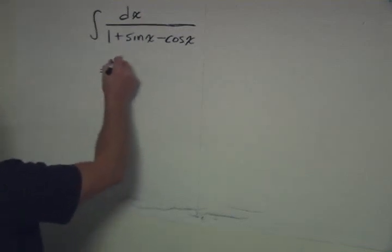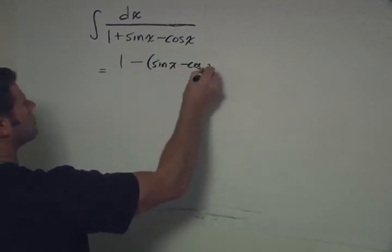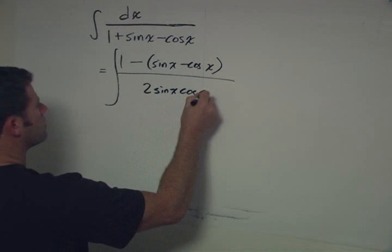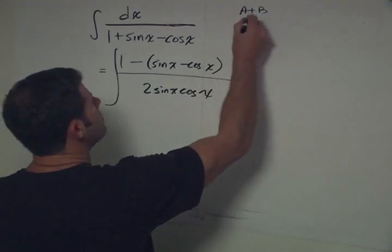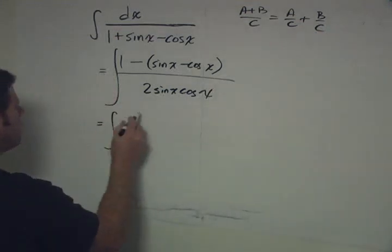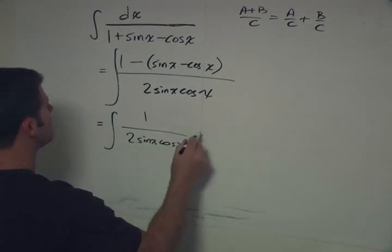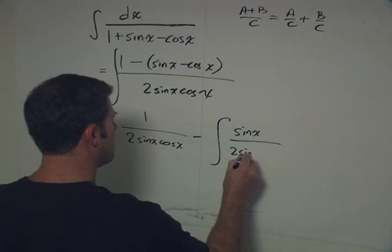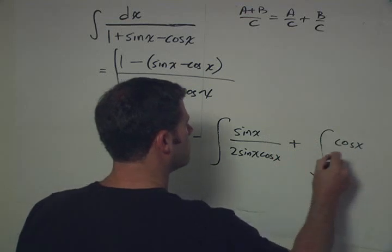So what we're left with is 1 minus sine x minus cosine x over 2 sine x cosine x — because that's all that's left when everything else in the bottom canceled out. We can now split this using a/c = a/c + b/c, giving us: the integral of 1 over 2 sine x cosine x, minus the integral of sine x over 2 sine x cosine x, plus the integral of cosine x over 2 sine x cosine x.